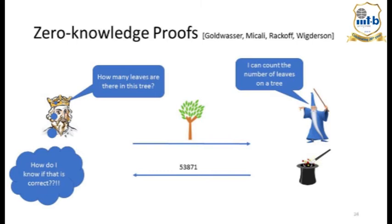This brings us to zero-knowledge proofs. Here's an example: a magician with a wand claims he can count the number of leaves on a very large tree. The king wants to know — how can I verify this without just counting myself? The king can count leaves on small trees, but we're treating this as a powerful task only the magician can do. What would be a good protocol to verify this claim interactively?